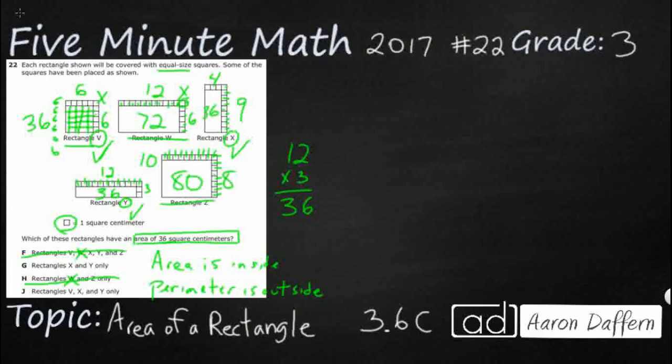So really I've just got three: rectangle V, rectangle X, and rectangle Y. So our answer is going to be J. G is close but it doesn't include V. So we've got three rectangles that have an area of 36 square centimeters. Thank you.